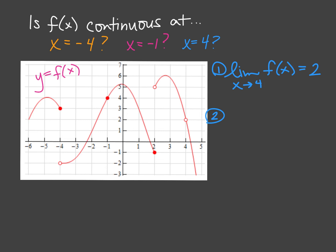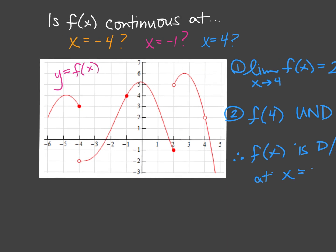Second, we want to check and see if our function is defined at that point. So what is f of 4? Well, at 4 exactly, there's actually no y value found at all. And so this is undefined. And therefore, since this is undefined, it fails our continuity at a point checklist. Therefore, we come to the conclusion that our function f of x is actually discontinuous. I'll write that in an alternative way. You can write that as d slash c if you'd like, or you can write not continuous at x equals 4.